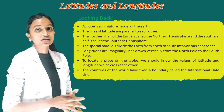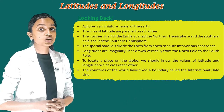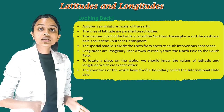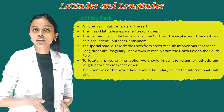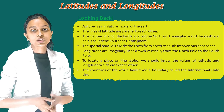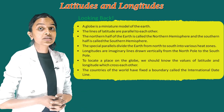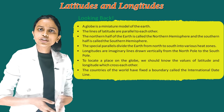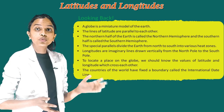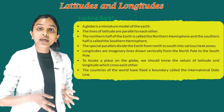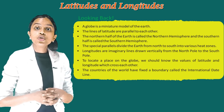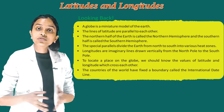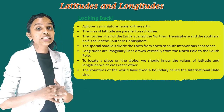Let's recap. A globe is a miniature model of the earth. The lines of latitude are parallel to each other. The northern half of the earth is called the Northern Hemisphere and the southern half is called the Southern Hemisphere. The special parallels divide the earth from north to south into various heat zones. Longitudes are imaginary lines drawn vertically from the North Pole to the South Pole. To locate a place on the globe, we should know the values of latitude and longitude. The countries of the world have fixed a boundary called the International Date Line.